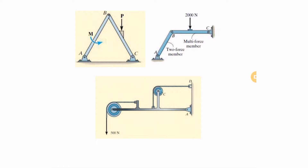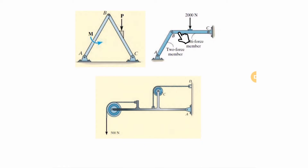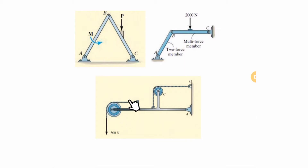In trusses we usually have massless links between different joints, but in frames we have massive and more elaborated joints between the links. Here, for example, you may be applying some forces or moments in the middle of a link, or we may have some pulleys — these are not as simple as the truss ones.